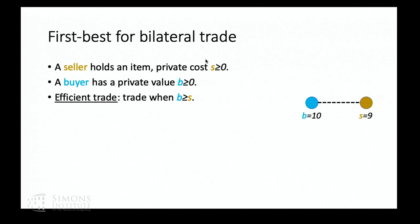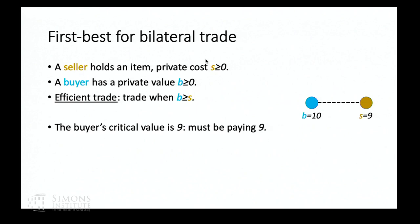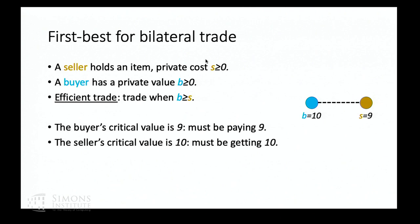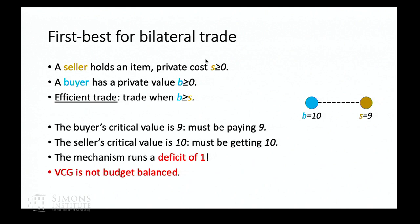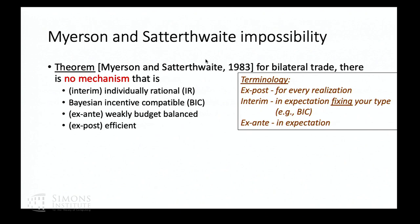More formally, I want a mechanism that is IR, IC, budget balanced — meaning the mechanism does not lose money by running — and also uses the efficient trade allocation. Since we're trying to maximize efficiency, the natural thing to do is run VCG and see what happens. If you run VCG, trade happens and the buyer pays $9 because that's the critical value. Similarly, the seller needs to be compensated by $10. So you can run VCG, but there's a deficit of one. VCG maximizes efficiency but it's not budget balanced.